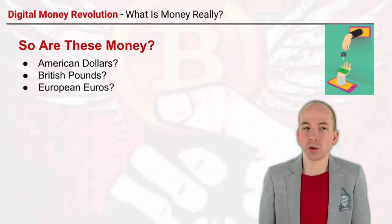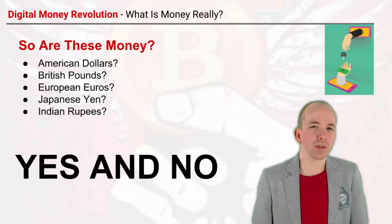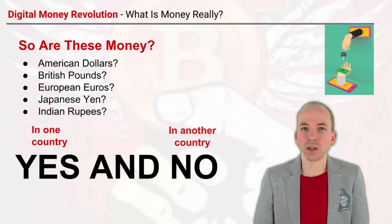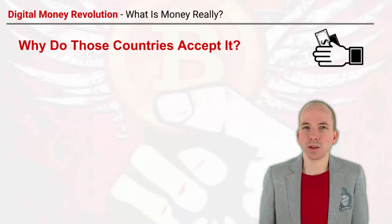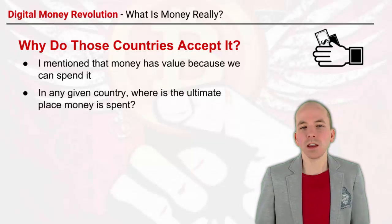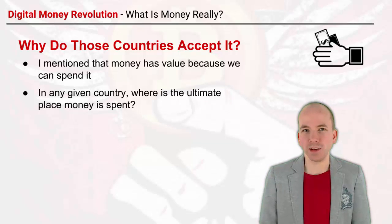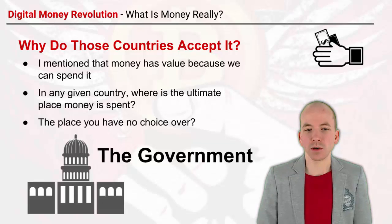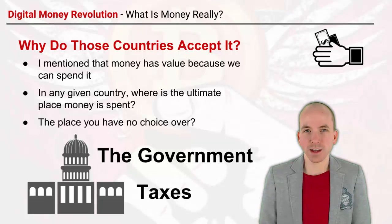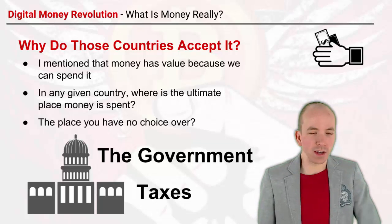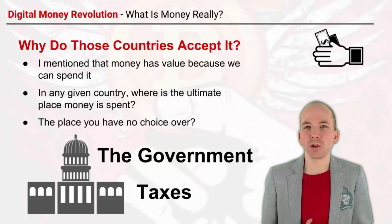So here's a question: are American dollars, British pounds, European euros, Japanese yen, or Indian rupees money? The answer is yes and no — yes in one country, no in another. Why do those countries accept those methods as payment? Money has value because we can spend it, and in any given country the ultimate place money is spent — where you have no choice — is the government, because the government collects taxes and they get to decide what currency you have to pay your taxes in. So the national currency in the United Kingdom is British pounds, and you will pay your taxes in British pounds.